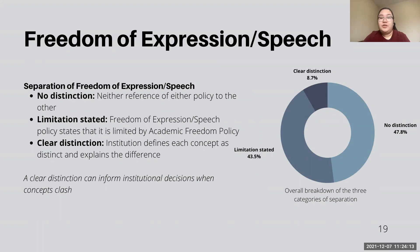No distinction meant there was no reference to either policy, usually found from institutions without distinct freedom of expression policies. Limitation stated meant that institutions had freedom of expression policies, and in that policy there was a statement saying it was not intended to amend or qualify existing academic freedom policies. For clear distinction, this was when institutions actually defined and stated the difference between academic freedom and freedom of expression — seen in only two institutions in the West: Mount Royal University and UBC.